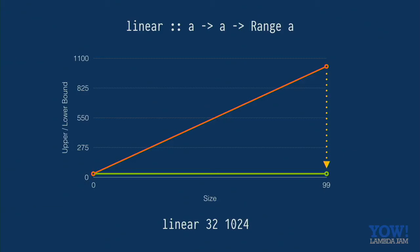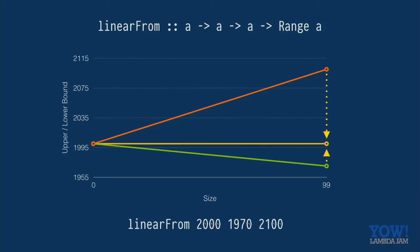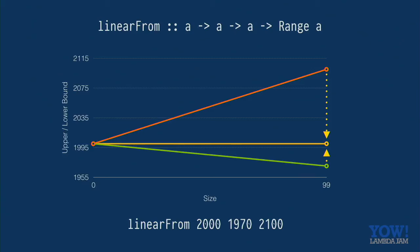And finally we have linear from. This is a nice way of generating years for a date or something like that. So we start with the year 2000 and then as the size increases, we expanded the range of years that we generate to down to 1970 up to 2100. But then when we shrink, we shrink to a nice year, like 2000, which is a lot nicer than shrinking to zero. And this is what it might look like if you're using these combinators. So in hedgehog, there's just one list combinator and it takes a range to control the size. And then using this range thing, you could implement all of the QuickCheck combinators. But if you want something a bit fancier, like you want a list between five and 10, which increases to five to 10 for the larger tests, you can do that. And then here's our year example.